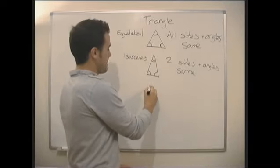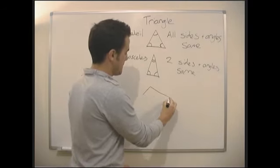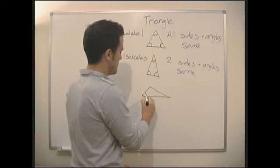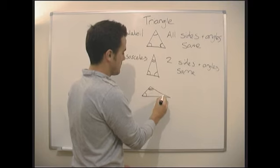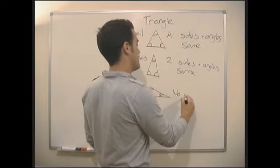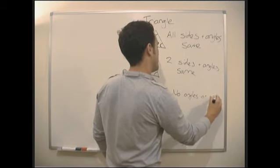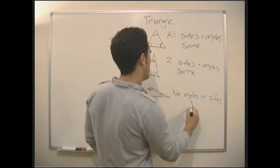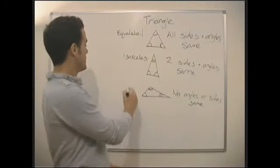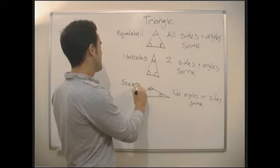So, next up, no angles the same and no sides the same. Okay, so no angles or sides the same. None, none whatsoever. And that we call a scalene.